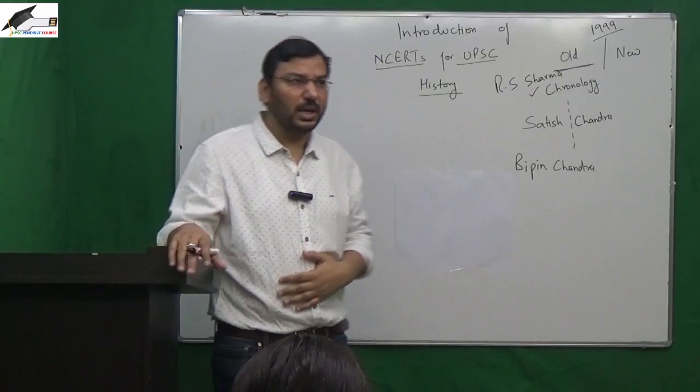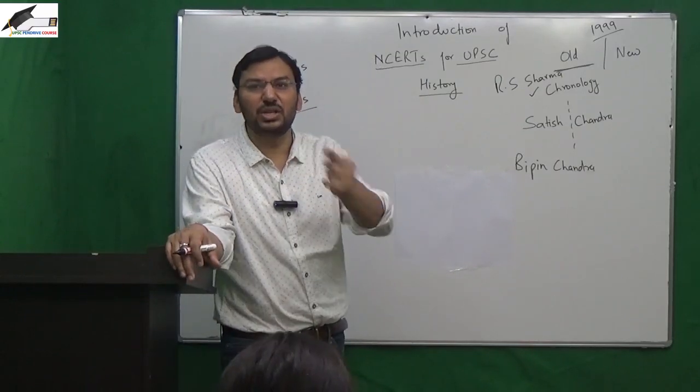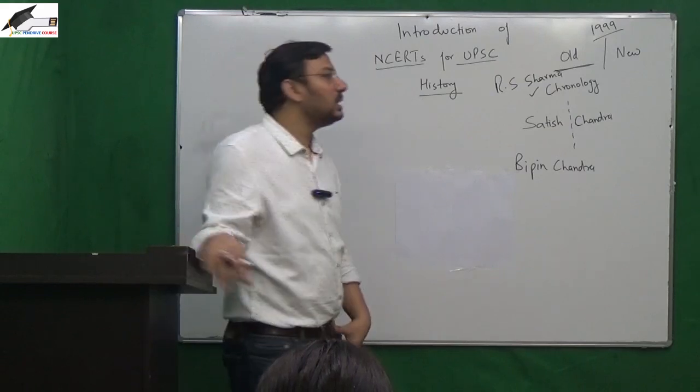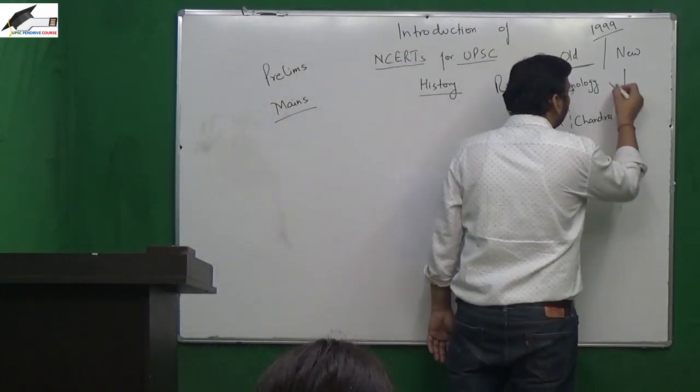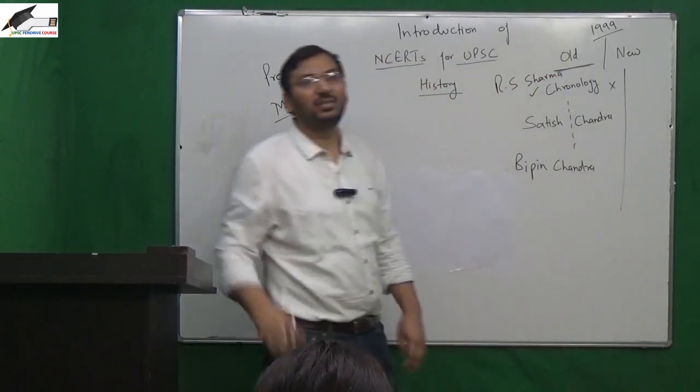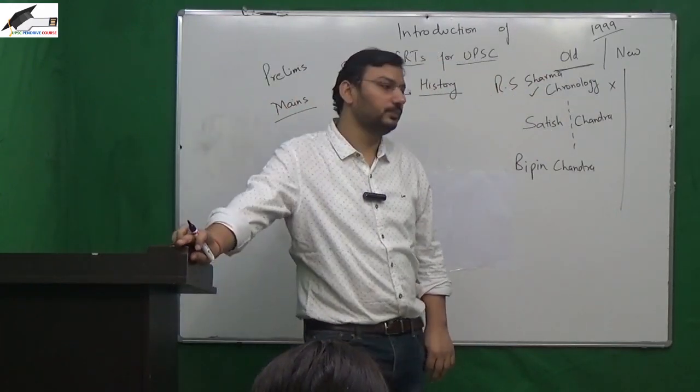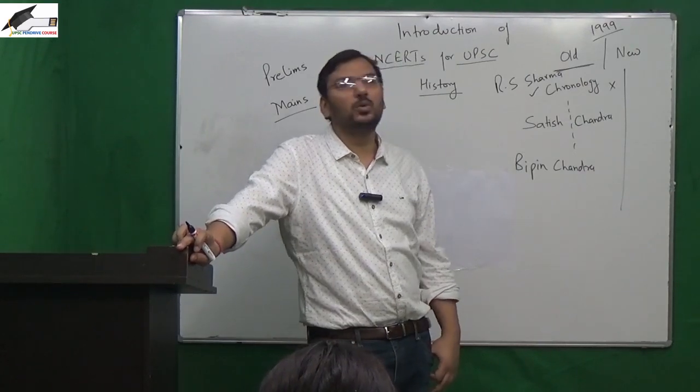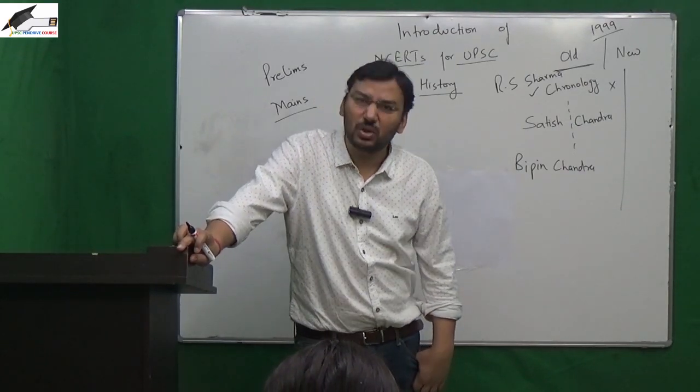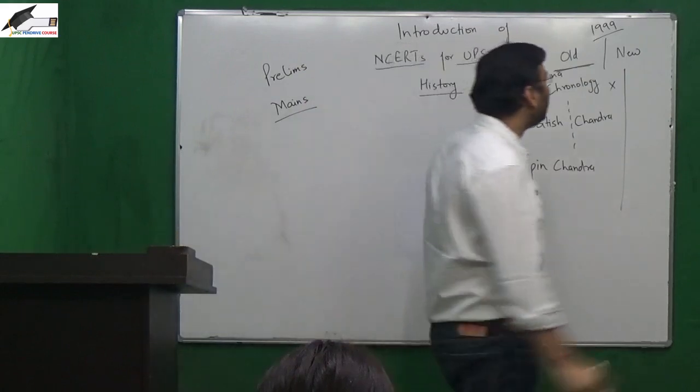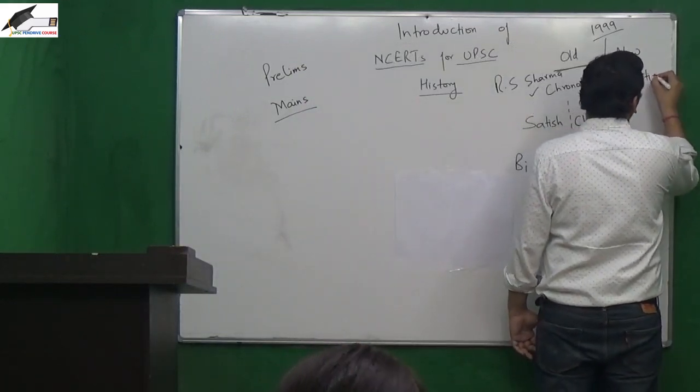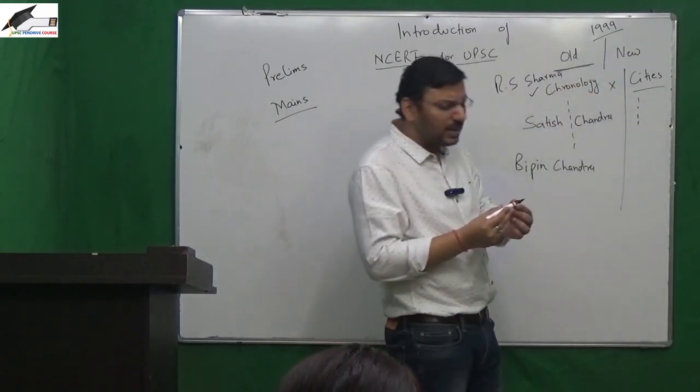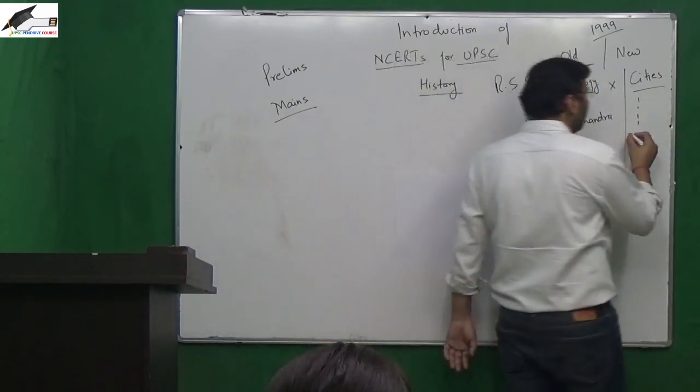In 1999, BJP government came and they started challenging this materialistic or left-wing Marxist version of these authors. Right-wing government questioned this and some NCERTs were to be rewritten. In 2004, government changed again. Congress came and they said let's take the chronology out, let's write history without story.